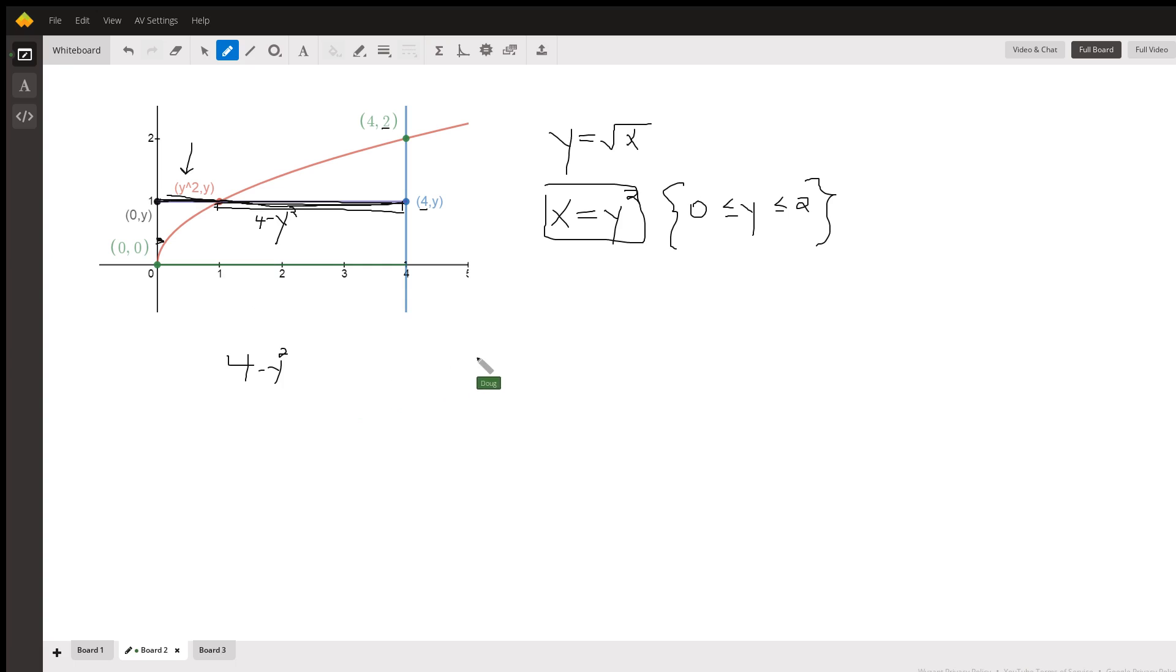Delta y represents the width of each typical rectangle. We want to sum them from 0 to 2 of 4 minus y squared, length times width. And both of those definite integrals should give us the same answer.